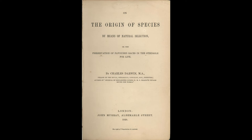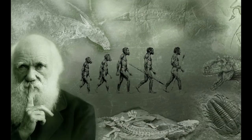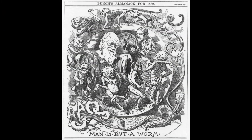En este libro, Darwin propone que los cambios de las especies son resultado de la lucha por la vida. Gracias a esta lucha, las variaciones, independientemente de su grado y origen, si son benéficas respecto a las relaciones de la especie con su entorno, se heredarán a la siguiente generación. Para Darwin, las variaciones obtenidas por uso y desuso, así como aquellas que vienen de la acción directa del medio, son adaptativas por igual. Las especies tienden a producir más progenie de la que puede sobrevivir y reproducirse. Esta capacidad de sobrevivencia y reproducción es variable. Esta variación se hereda.